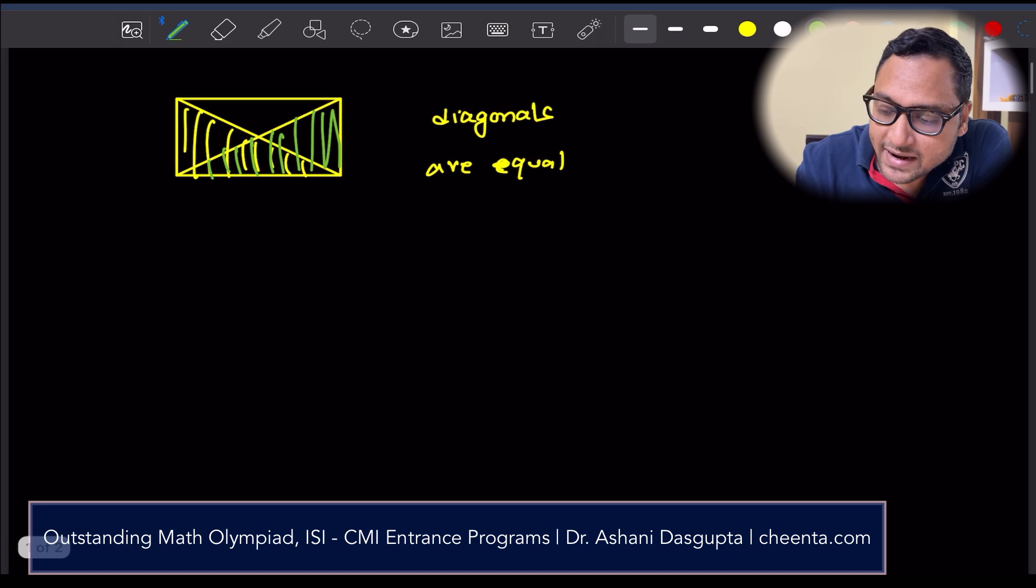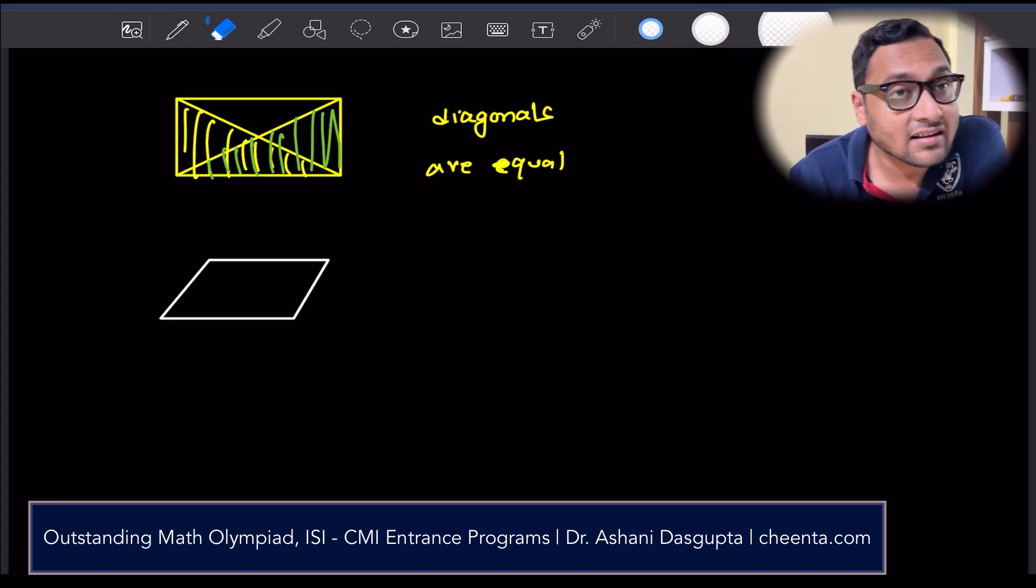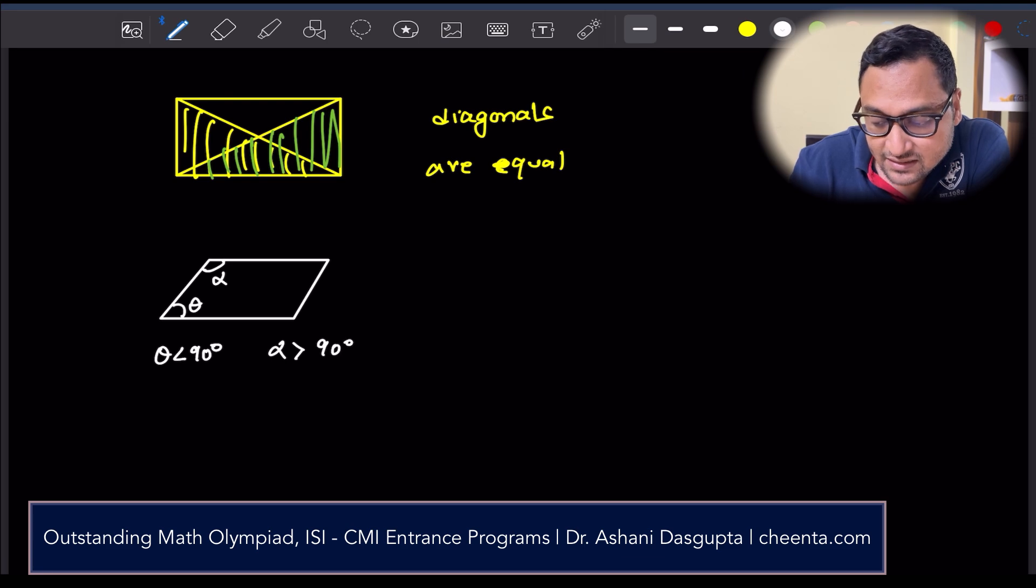Things start to get a little bit interesting when you work with parallelograms which are not rectangles. It's not a rectangle, so not all the angles are 90 degrees. One of the angles, let's say theta, will be less than 90. And the other angle, let's say alpha, will be greater than 90.